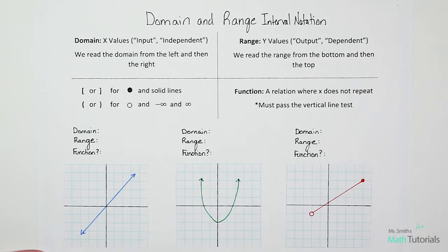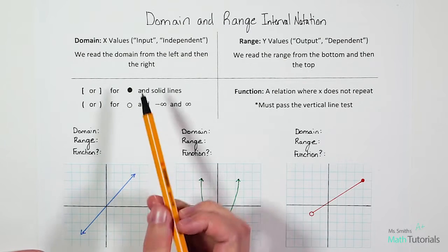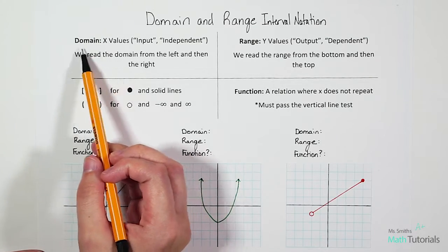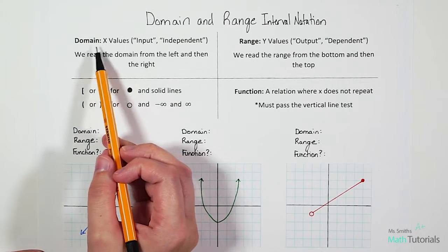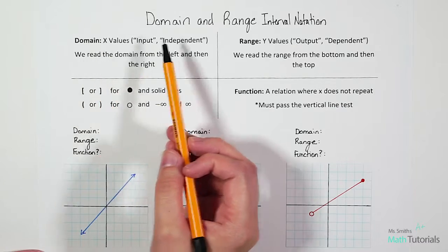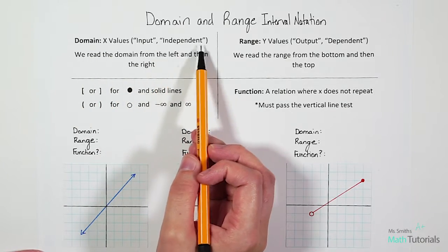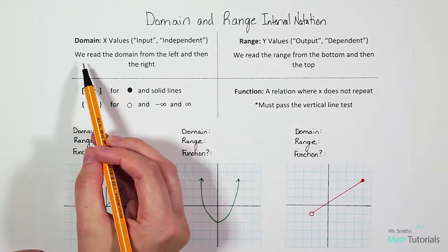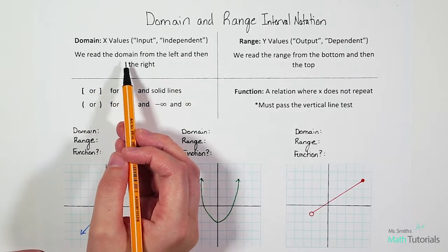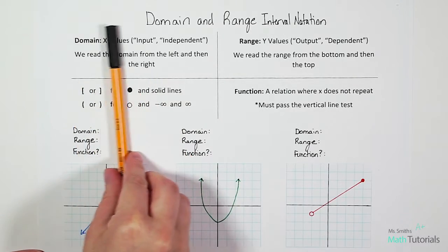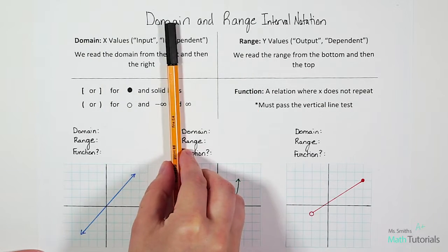The first thing we want to understand right from the beginning is what is domain and what is range. Domain is just another way of saying the x values. Other common words are input and the independent. We will always read domain on a graph from left and then right.